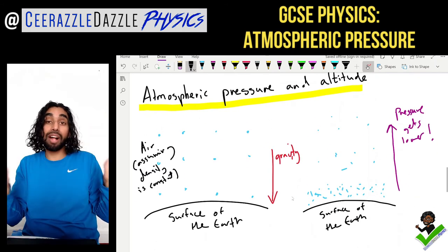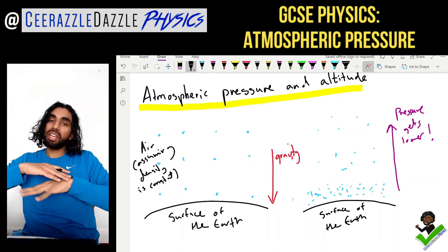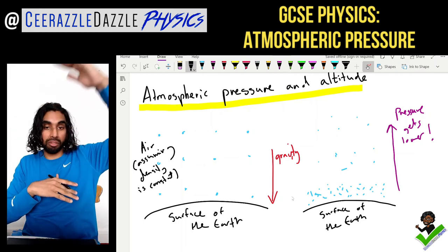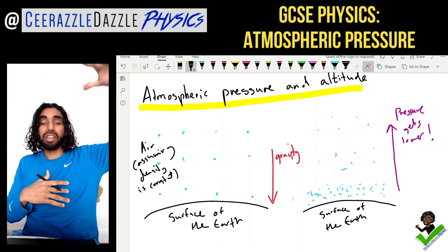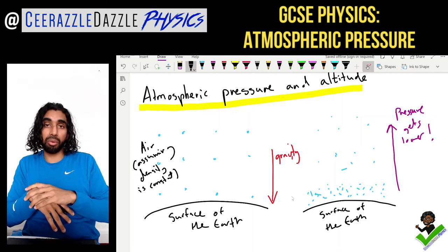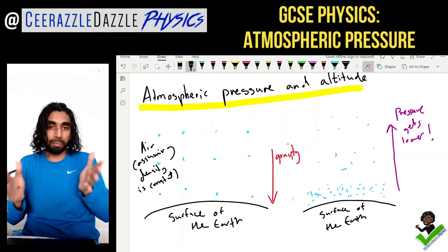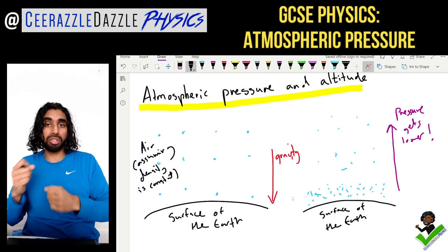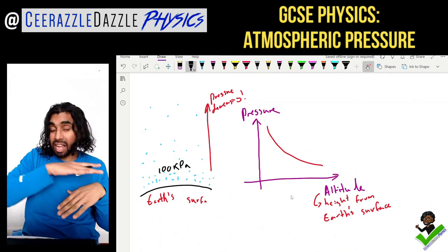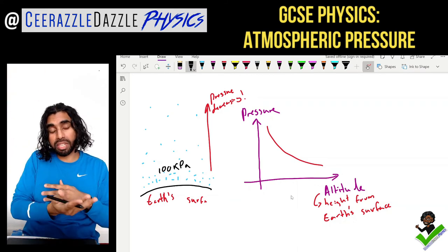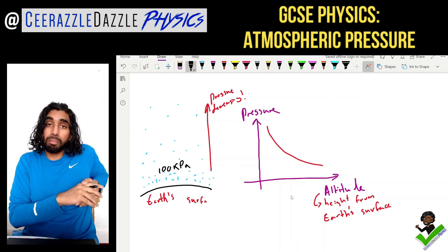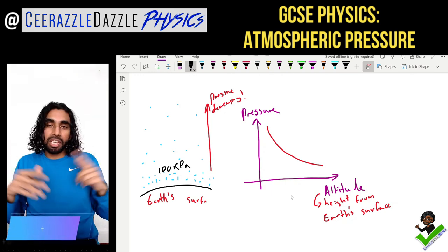Atmospheric pressure with altitude: people usually assume air density is constant, but in reality gravity drags most particles down to the bottom, so the bottom has the highest density and pressure decreases as you move away from the earth's surface. That's why marathon runners train at high altitude — to get their bodies used to taking in lower amounts of oxygen. On a graph of pressure versus altitude, as altitude increases pressure drops down, and at the earth's surface the atmospheric pressure is 100 kPa.